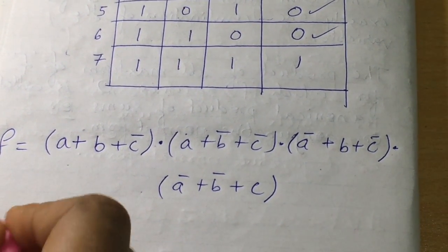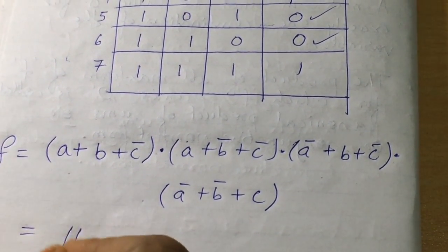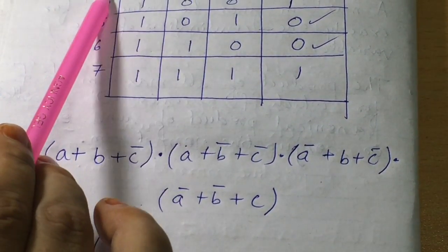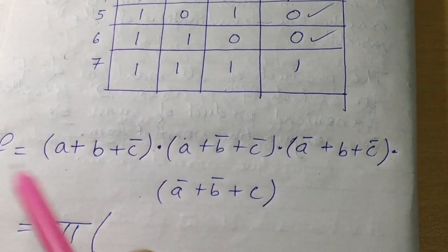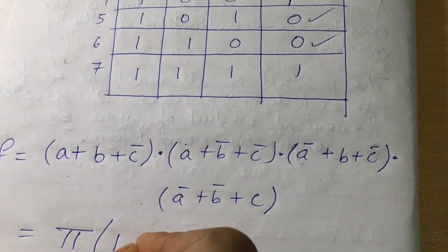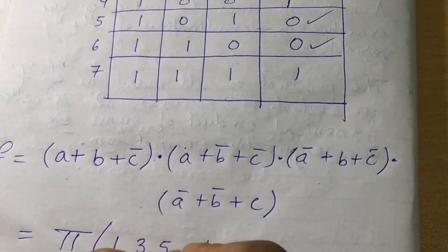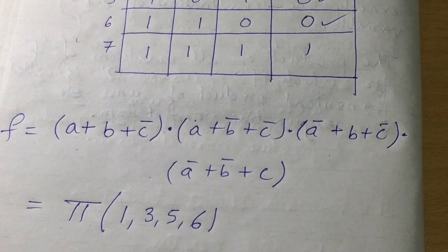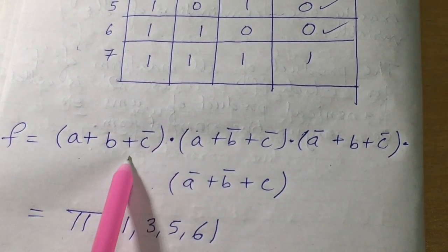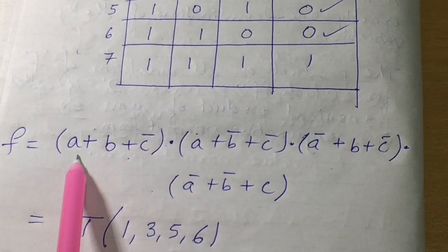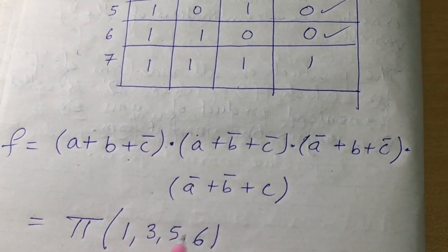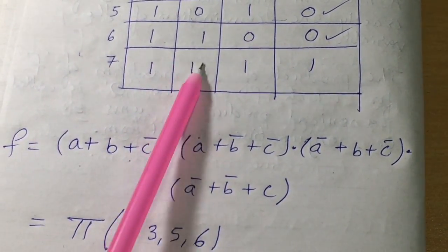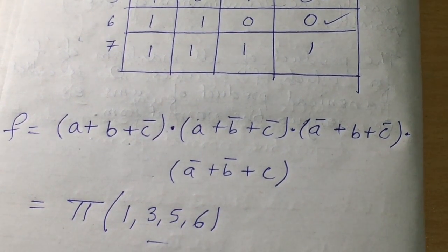This is the canonical product of sum. You can write it in compact representation as f = Π(1, 3, 5, 6). This compact form is analogous to the sigma notation used for canonical sum of products.